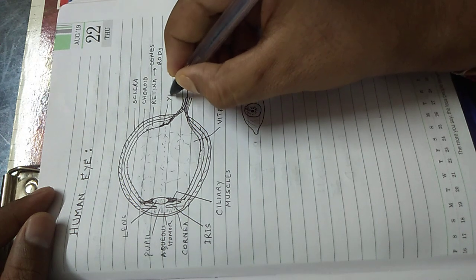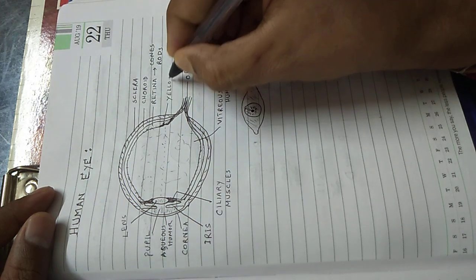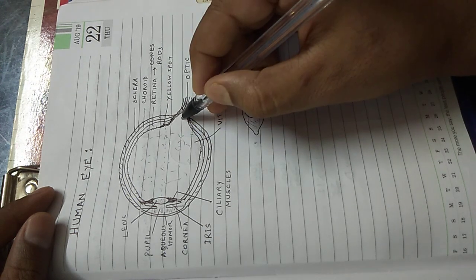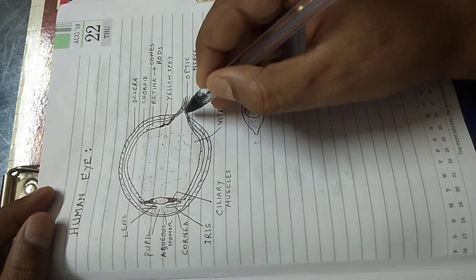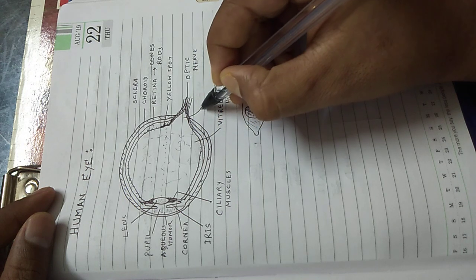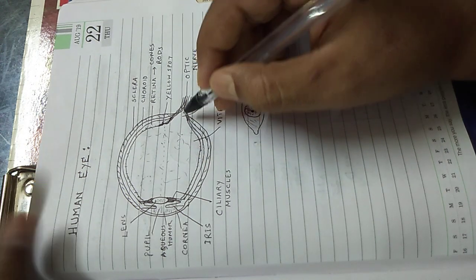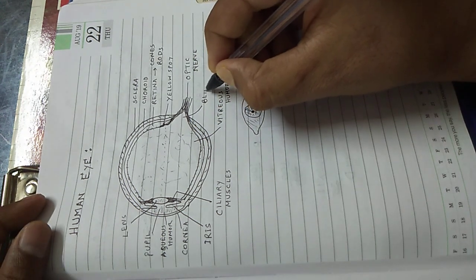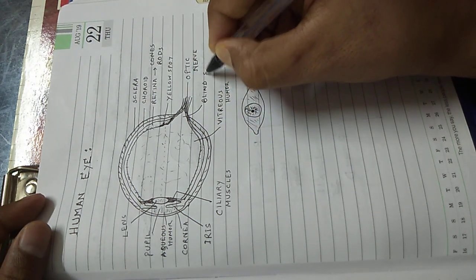The portion where the optic nerve leaves the eyeball has no light sensitive cells, so anything getting focused here actually cannot be seen. This is called the blind spot.